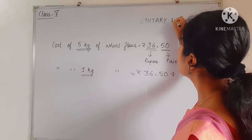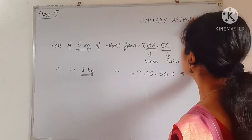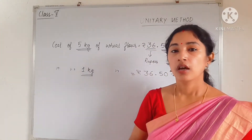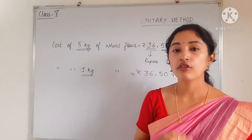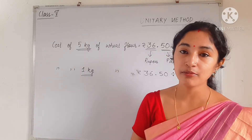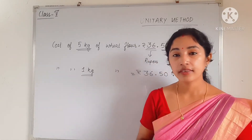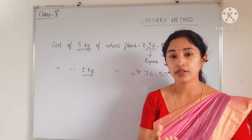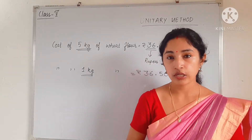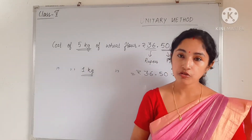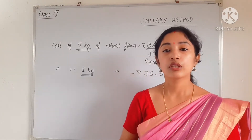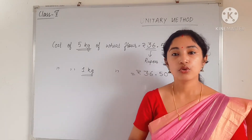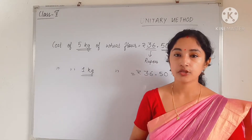For the unitary method, let me give you one example. Suppose whenever we go to the market and want to buy some items, we must know the cost of one item. If you know the cost of one item, you can easily find the cost of many items. Suppose you want to buy 10 chocolates — you must know the cost of one chocolate.